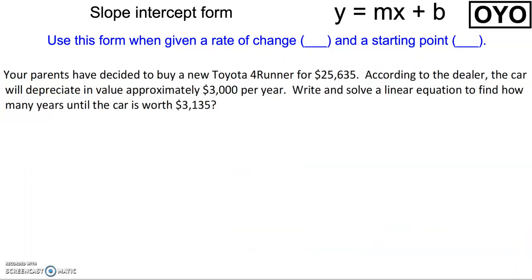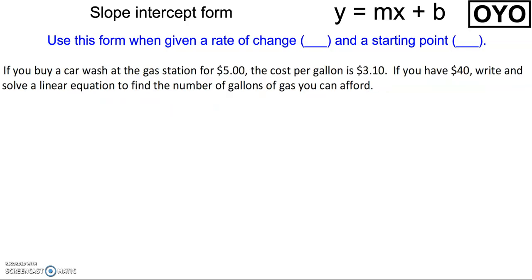The next two examples are on your own. Your parents have decided to buy a new Toyota 4Runner. The next example is if you buy a car wash at the gas station for $5. Remember to identify the rate of change and the starting point, but also determine what your x and y have to represent in the problem.